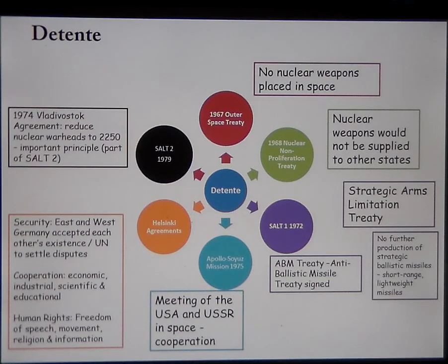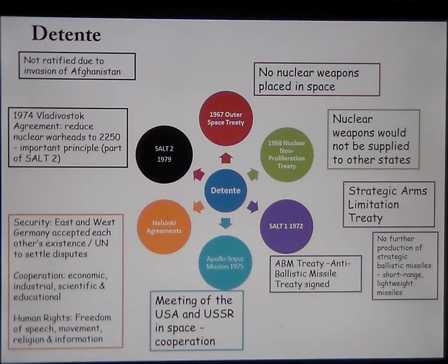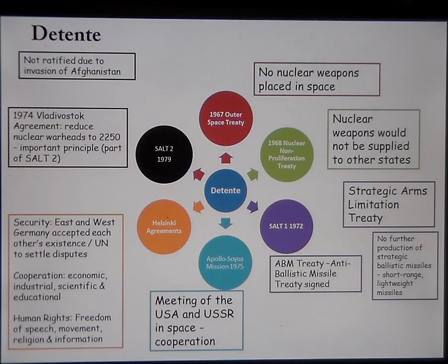As part of SALT II, the 1974 Vladivostok Agreement stated that they would reduce nuclear warheads to 2,250. SALT II included a limit on MIRV systems, a ban on the construction of land-based intercontinental ballistic missile launchers, and limits on deployment of new types of offensive arms. However, none of that actually came into being because it was not ratified by the Americans due to the invasion of Afghanistan.